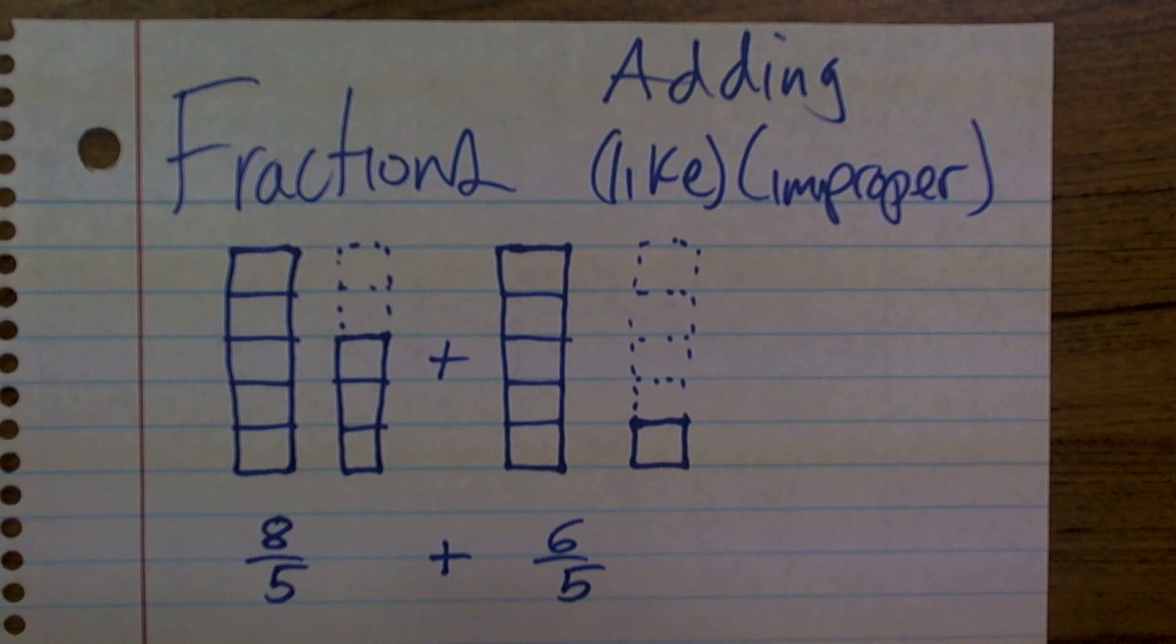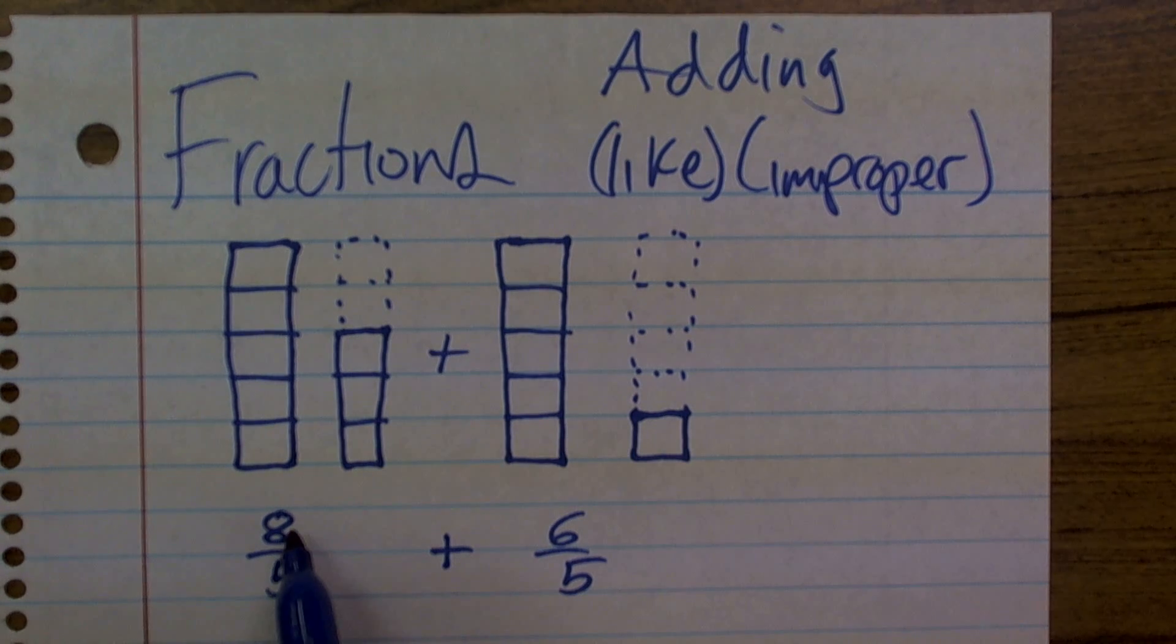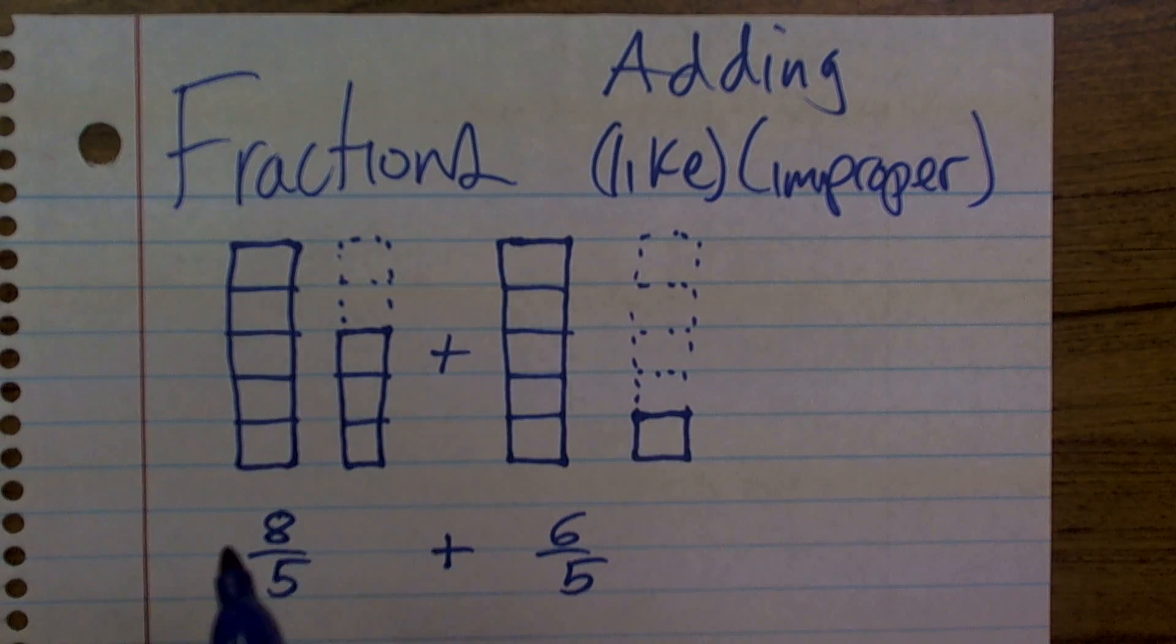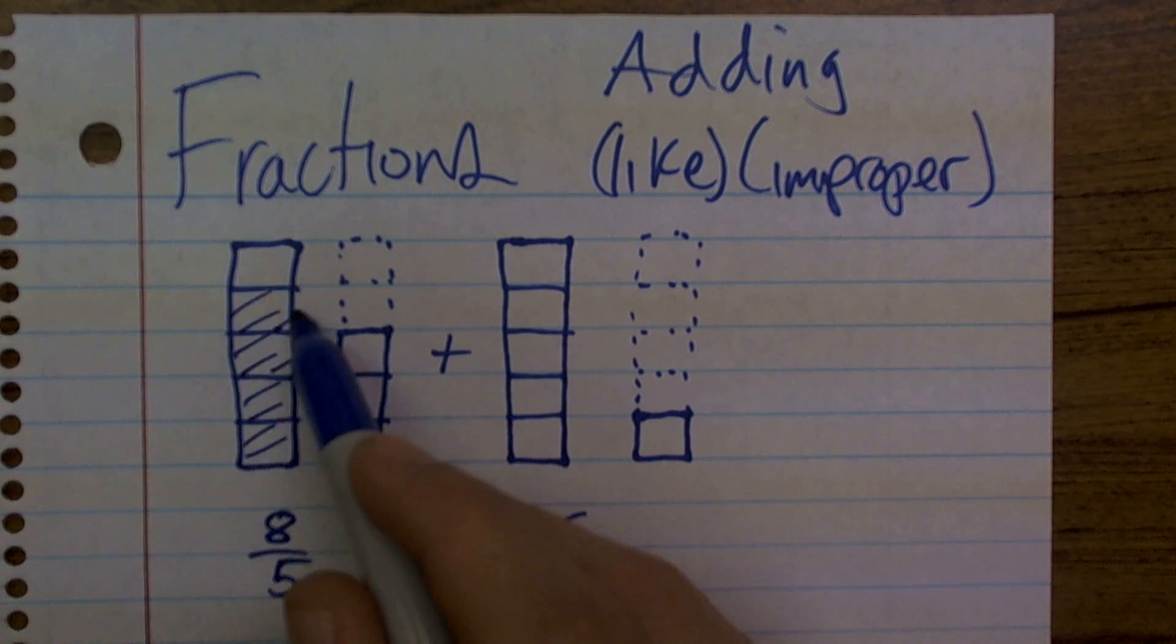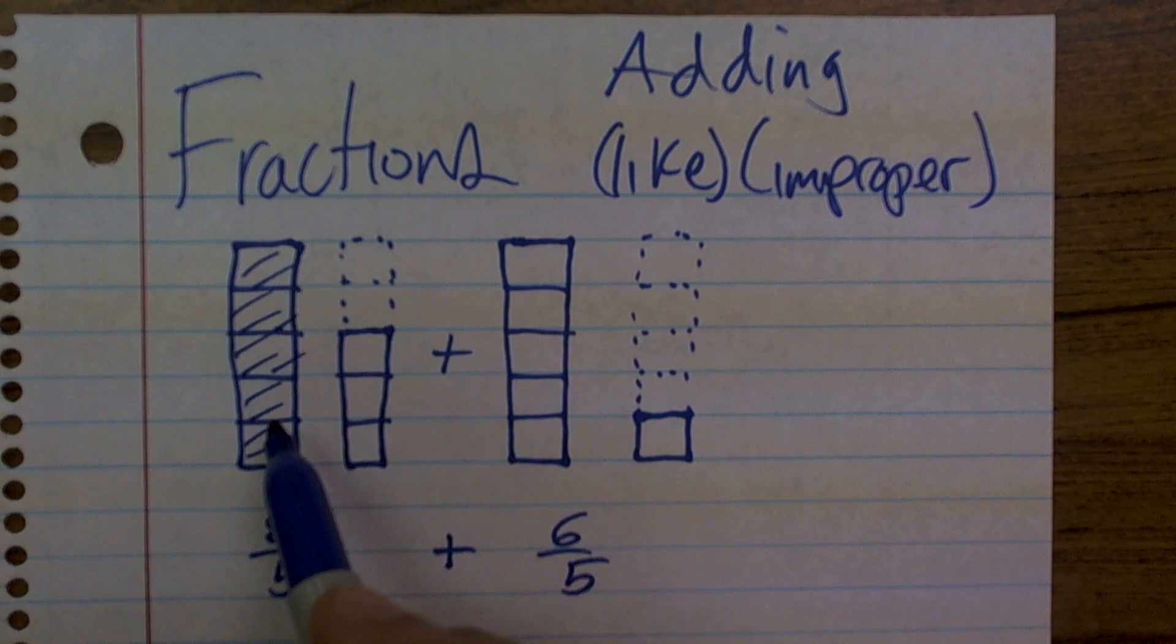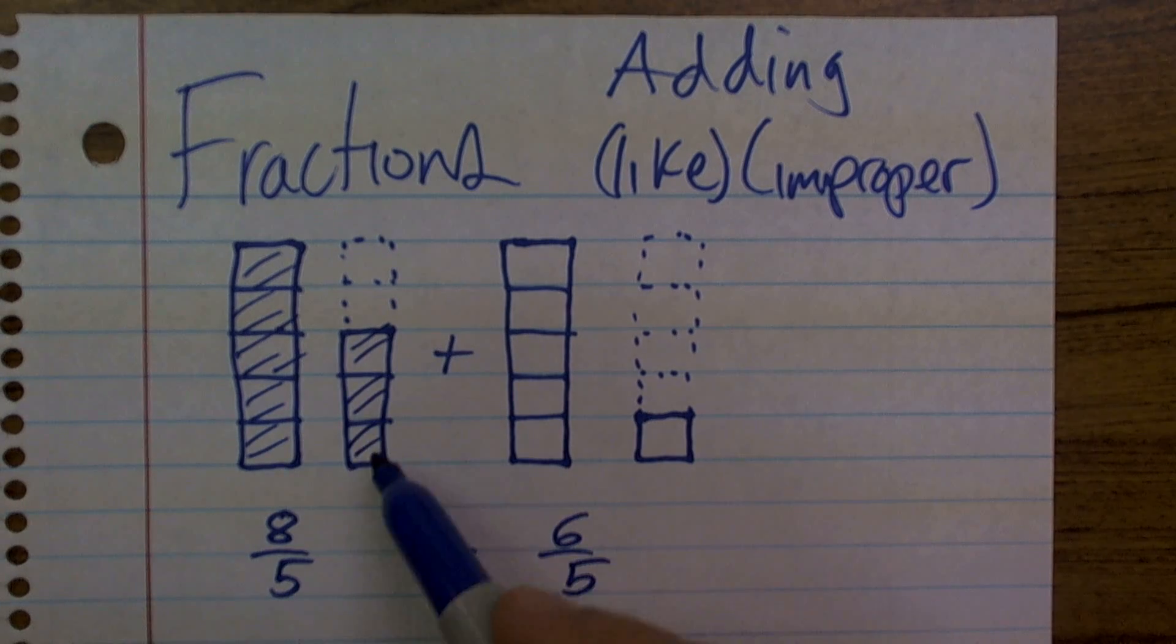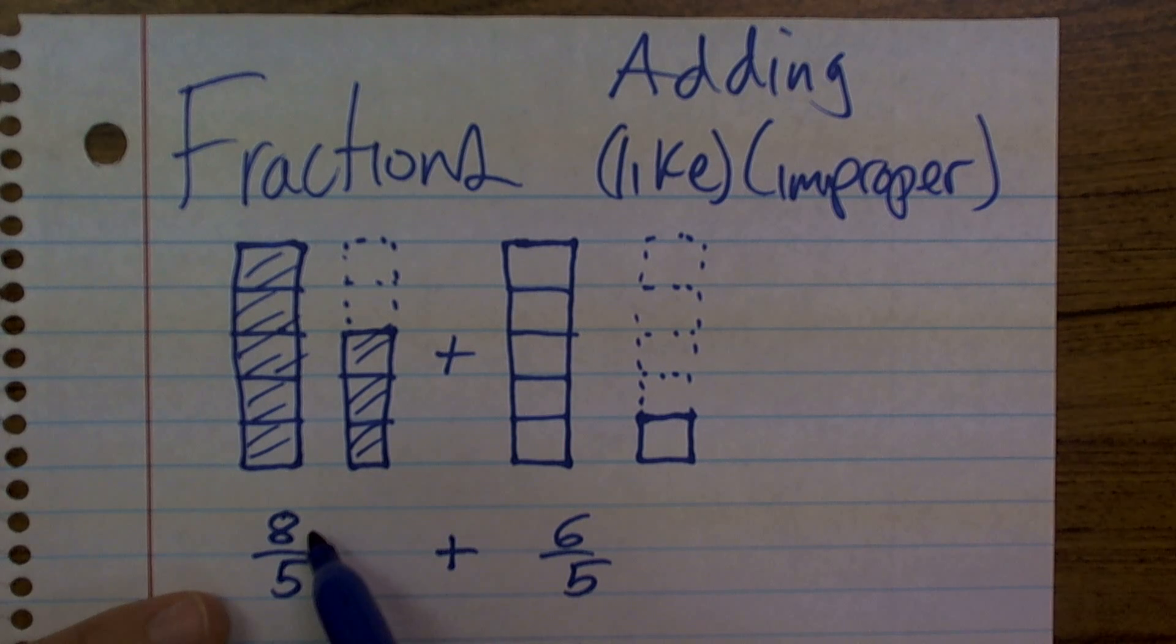If you're dealing with improper fractions, it's telling you that you're selecting more parts than make up a whole. Remember, a fraction is your part over a whole. Here I've selected five parts over five, which makes one whole, but there's an extra three more parts. So five plus three gives us eight parts total selected, where it only takes five parts to make a whole.